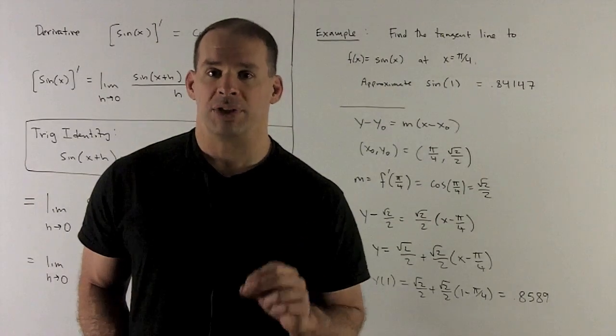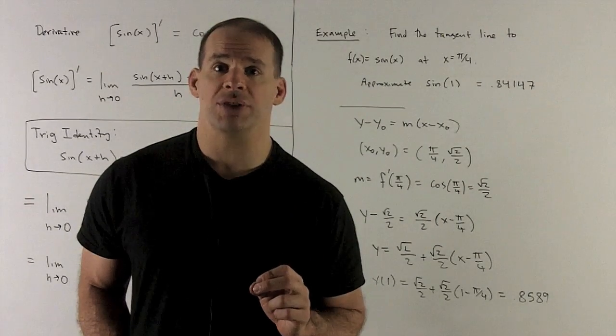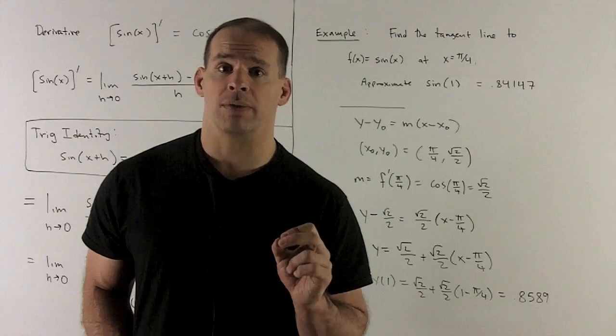I get my point by just evaluating pi over 4 into the function. So our point's going to be pi over 4, square root of 2 over 2.